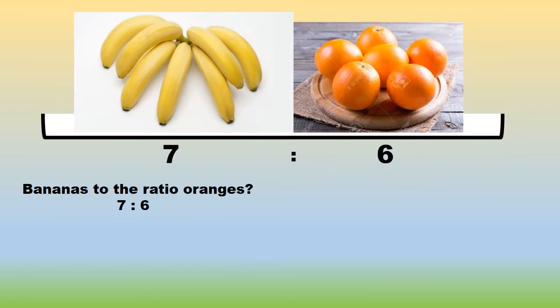You can write it up as bananas to the ratio oranges is 7 to 6. What would be the ratio for oranges to bananas? That would be 6 to 7.